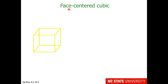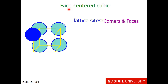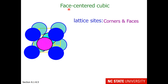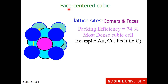Our last cubic cell structure is called face-centered cubic. The lattice sites are going to be the corners and the faces — there are the corners in back, the corners in front, the face behind, in front, and around the sides. The packing efficiency is 74%, so this is our most dense cubic cell. Elements that pack like this are gold, copper, and stainless steel. Stainless steel is iron in which a little bit of carbon has been added, and it is much more resistant to rusting than simple iron because of this more dense face-centered cubic structure.